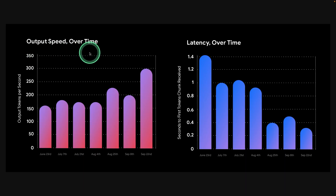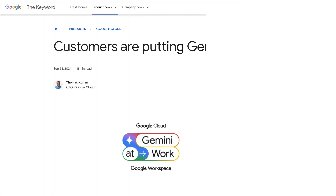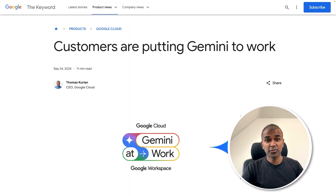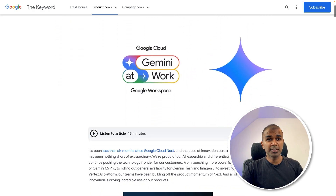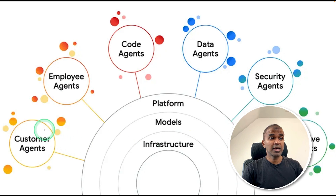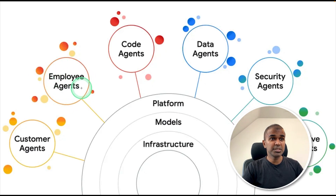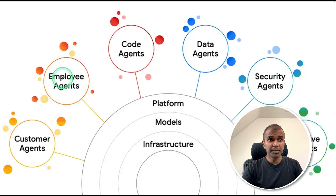The output speed over time is higher and the latency is getting lower, which means performance in applications is going to be quicker. Just as AI is integrated into all Microsoft products, we have Gemini integrated into all of Google's products — that is Google Workspace. Here you can see Gemini as customer agents, meaning you can add agents for customer applications. Within a company, you have employee agents which have access to all relevant internal documents. Then you have code agents to generate code.